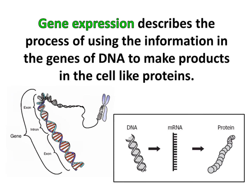Gene expression describes the process of using the information in the genes of DNA to make products in the cell, like proteins. When genes are being expressed, the DNA is first transcribed into a strand of messenger RNA. That messenger RNA then goes into the cytoplasm where it is finally translated into the cell's proteins.